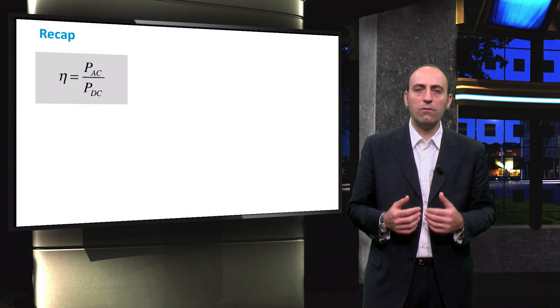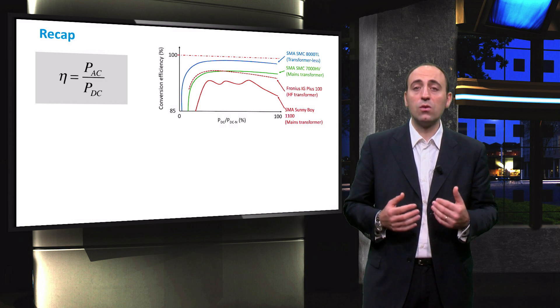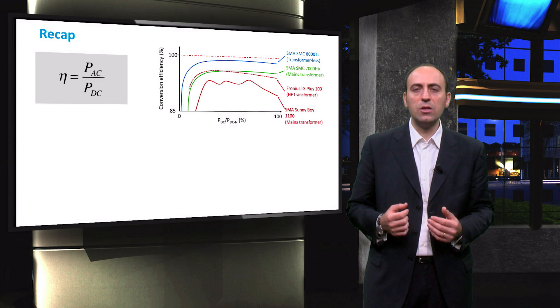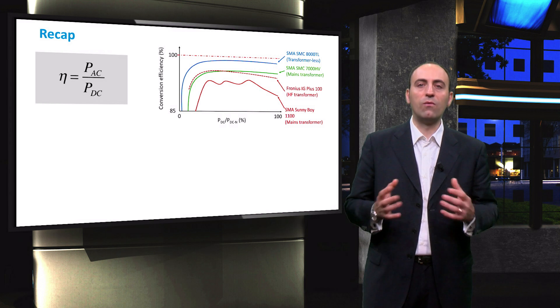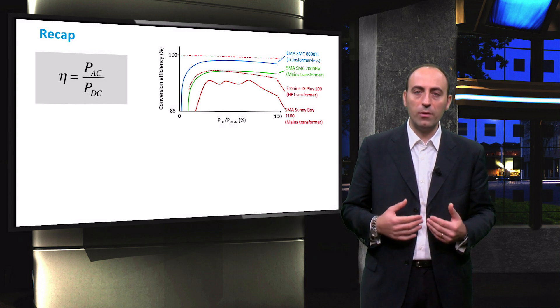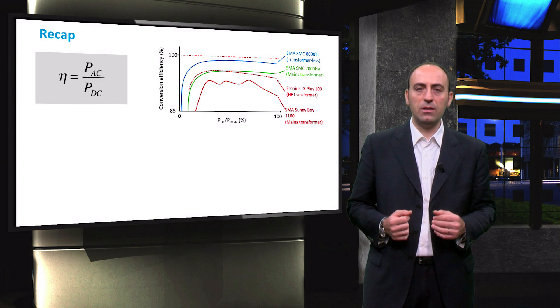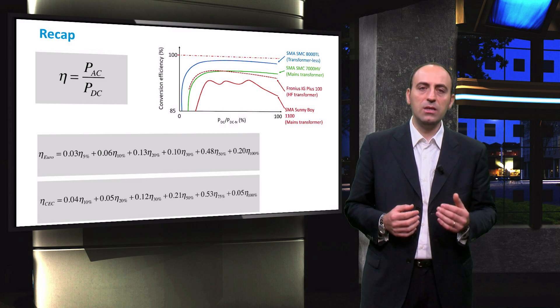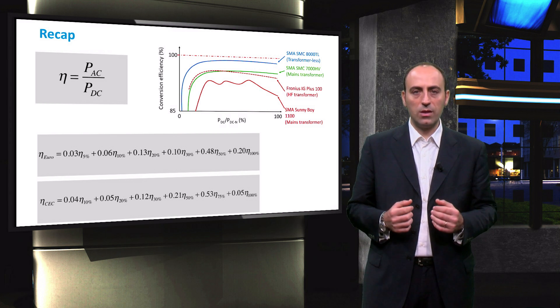To recap, we have seen the simple formula of the inverter efficiency and found that the behavior of the inverter is not constant for every input power level. Since analytical description would be very complicated and manufacturers often do not provide all the data necessary to develop a physical model, empirical formulas and models have been developed. Among them, it is worth mentioning the Euro and the CEC weighted efficiencies that consider the behavior for different solar expositions.